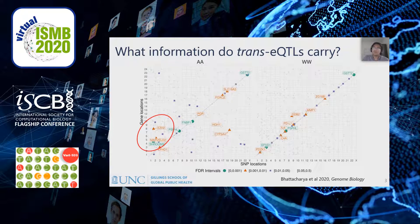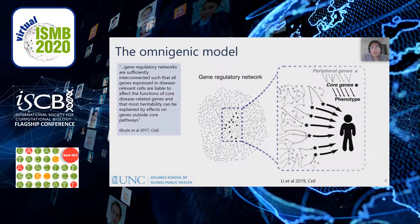Several groups — like Brandon Pierce's group at the University of Chicago, Frank Alberts at the University of Minnesota, and Leonid Kregliak at UCLA — have shown that trans-eQTLs often huddle around regulatory elements. These observations are in line with the omnigenic model proposed by Jonathan Pritchard's group at Stanford. In it, they propose that gene networks are so interconnected that all genes in the transcriptome have some effect on complex phenotypes. Core genes directly affect the trait, while peripheral genes affect the core genes and thus have indirect effects on the phenotype.